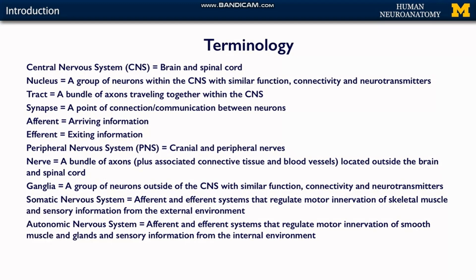Another term used in neuroanatomy is 'ganglia.' Ganglia is also a group of neurons, but outside the central nervous system — with similar function, connectivity, and neurotransmitters. So nucleus refers to neurons within the CNS, while ganglia refers to neurons outside the CNS.